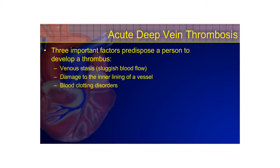The three important factors in developing a thrombus are: venous stasis — sluggish blood flow seen in pregnant or immobile patients, those with obesity, heart failure, or those on long plane or car rides; damage to the inner lining of a vessel caused by trauma, inflammation, venipuncture, or IV therapy agents; and blood clotting disorders caused by dehydration, certain cancers, or the use of oral contraceptives or hormone replacement therapy.